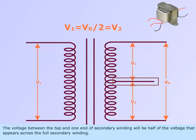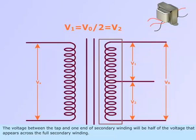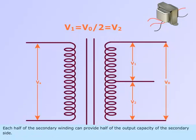The voltage between the tap and one end of secondary winding will be half of the voltage that appears across the full secondary winding. Each half of the secondary winding can provide half of the output capacity of the secondary side.